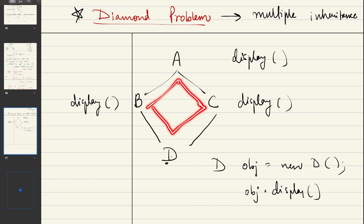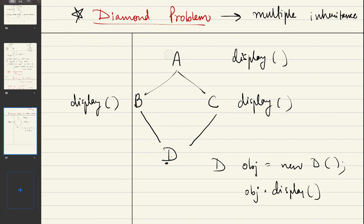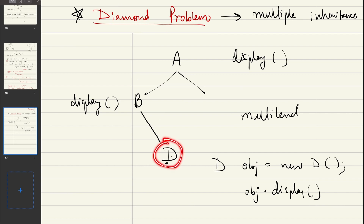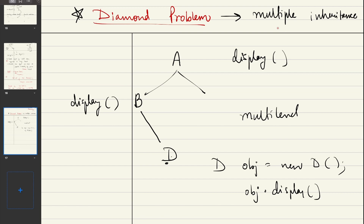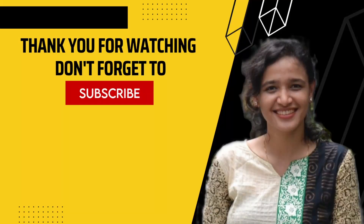This diamond problem is what you run into if you allow multiple inheritance. Multiple inheritance means a class has more than one parent — like class D having two parents, B and C. That is why in Java, multiple inheritance is not allowed. You can have multi-level inheritance — D's parent is B and B's parent is A — but a class cannot have more than one parent. This is something you should remember, and it is also a common interview question. I hope this helps. Bye.